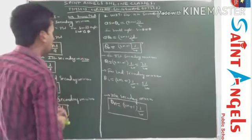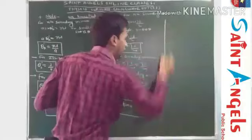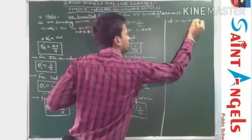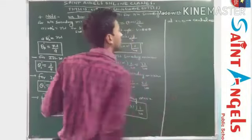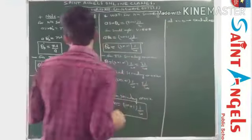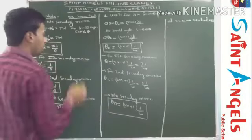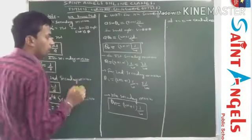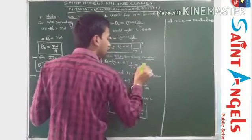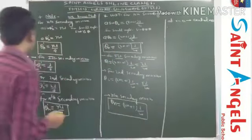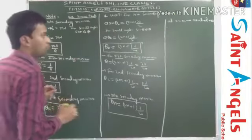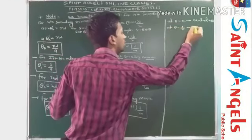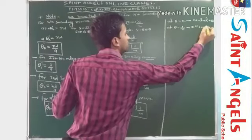If we observe carefully, at x = 0, central maxima forms on the screen. After central maxima, the angular position of first secondary minima is λ/a, while the angular position of first secondary maxima is 3λ/2a. It means just after the center, first secondary minima forms at θ = λ/a.